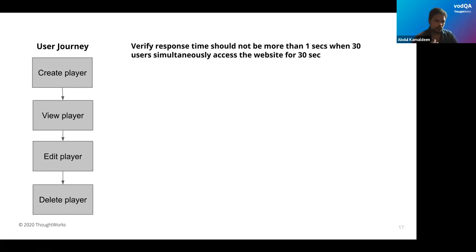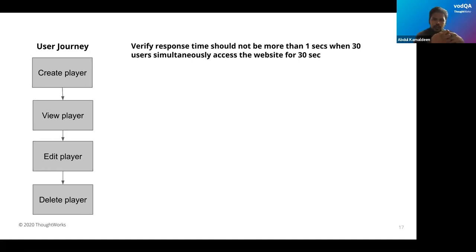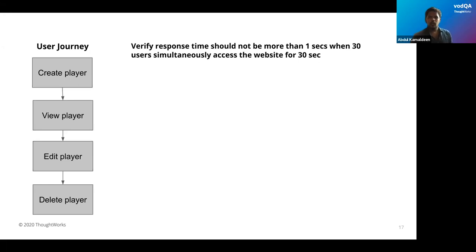For this demo, we have a basic user journey based on the CRUD application: create a user, get the details of that user, edit that user, and delete that user. We are checking that the response time should not be more than one second for each transaction — whether it is create, view, edit, or delete. The system should handle 30 concurrent users for 30 seconds. For demo purposes we've kept this minimal — in a realistic application, your load and duration would be entirely different.